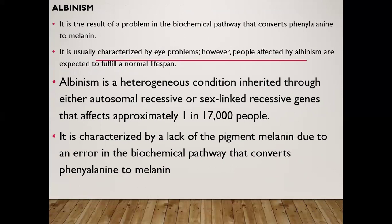Albinism results from a problem in the biochemical pathway that converts phenylalanine to melanin — the pigment that gives skin its color. It is a heterogeneous condition inherited through autosomal recessive or sex-linked recessive genes, affecting approximately 1 in 17,000 people. It is characterized by lack of melanin pigment due to an error in the phenylalanine-to-melanin biochemical pathway. People with albinism are expected to fulfill a normal lifespan, although it is usually characterized by eye problems.